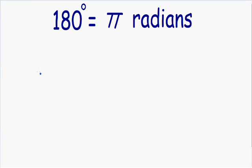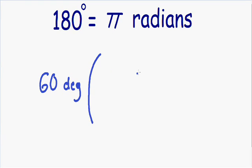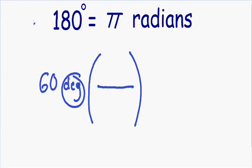Let's say we have an angle of 60 degrees, and we want to convert it into radians. Anytime I do any type of conversion, I always make what I like to call a conversion tool. This conversion tool is just a big parentheses with a fraction. In the denominator of the fraction, you always have the same units that you start with. Since we're starting with degrees, we have to have degrees in the denominator.